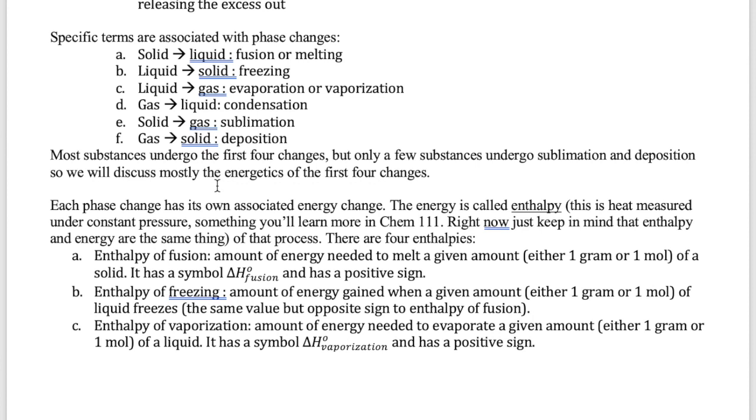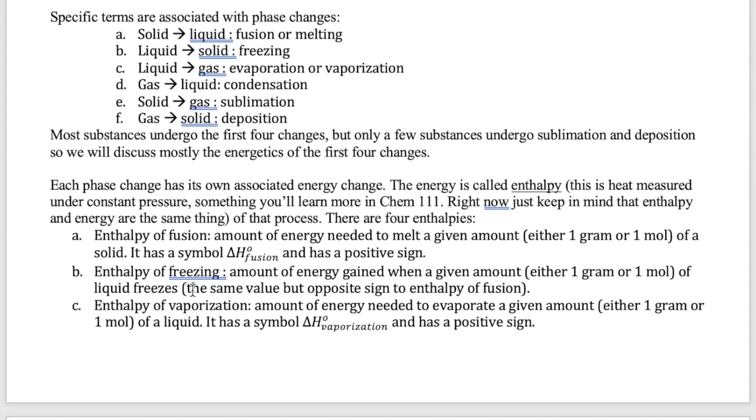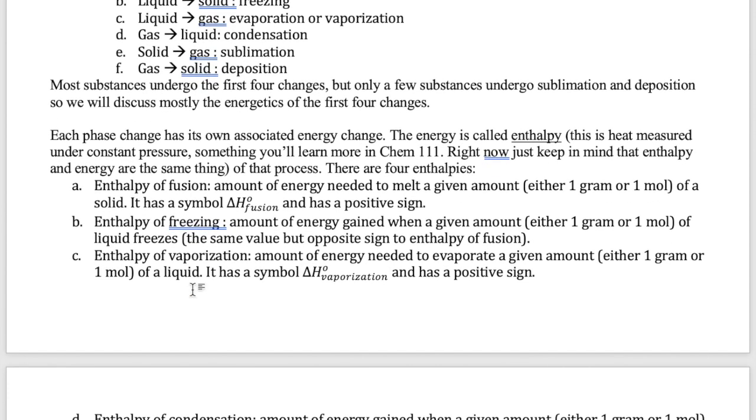Recall that we use the term enthalpy to represent the heat of a reaction. Specific phase changes have their own enthalpies. So for example, the heat that is needed to evaporate a specific quantity of liquid is called the liquid's enthalpy of vaporization and has the symbol delta H vaporization. Because this is an endothermic process, the sign of this delta H is positive. The degree symbol next to the delta H indicates the pressure at which the vaporization takes place. There are a few more of these phase change enthalpies that you will encounter in chemistry.